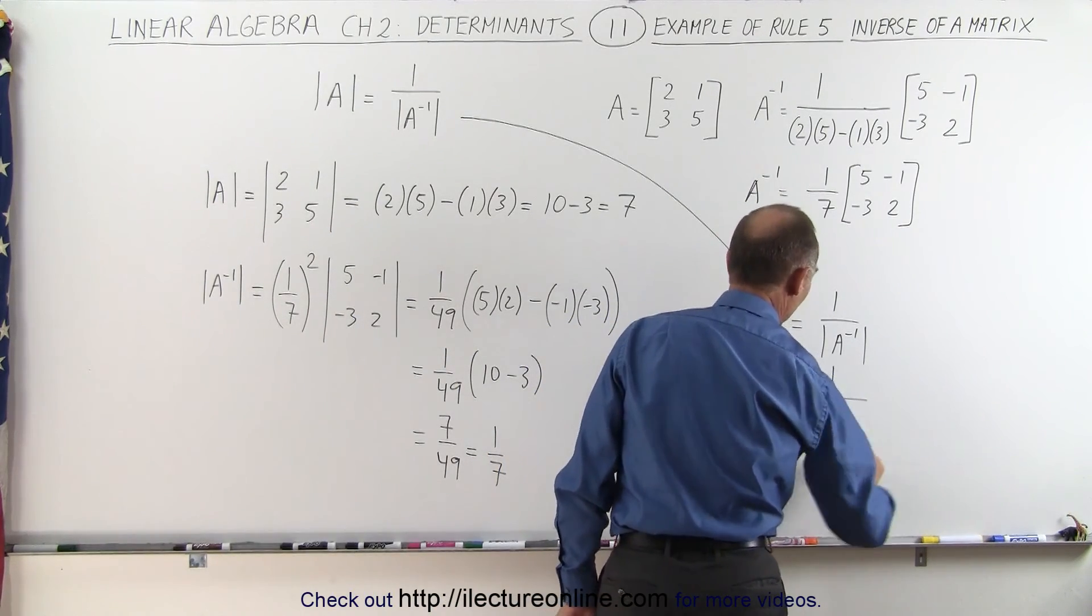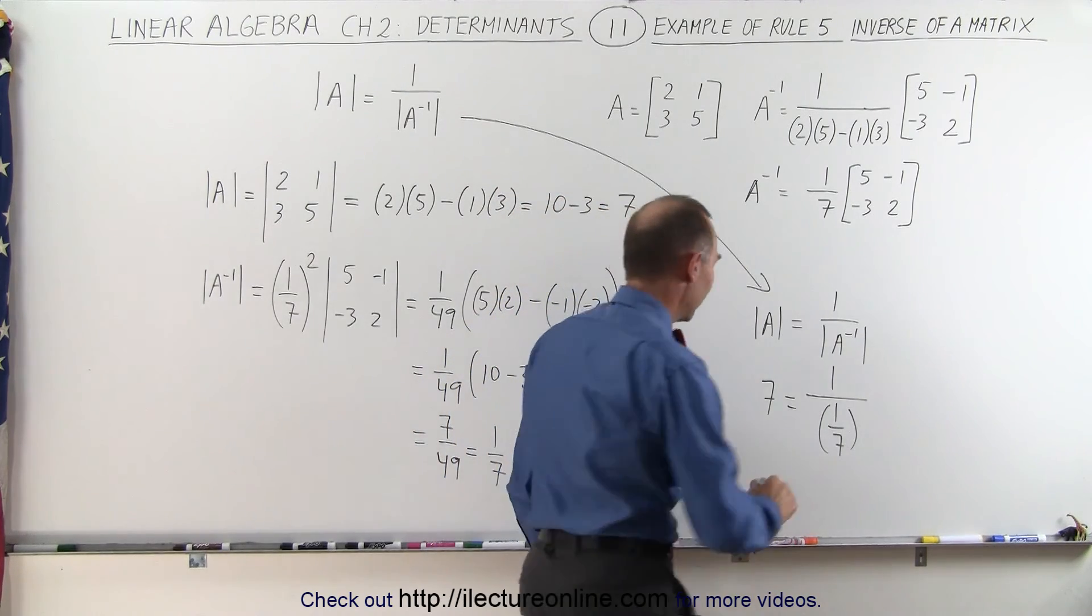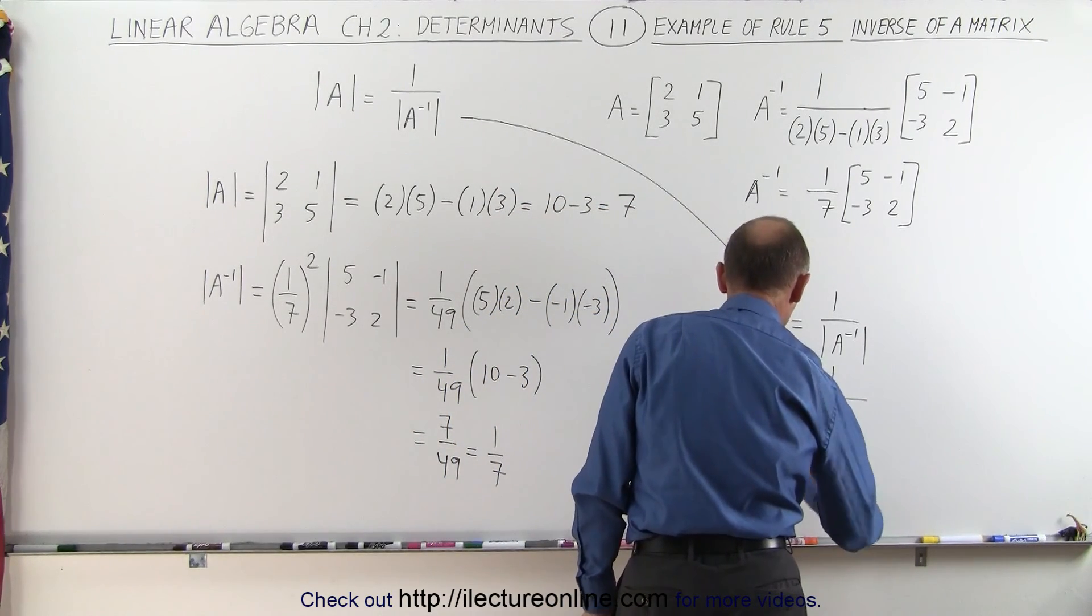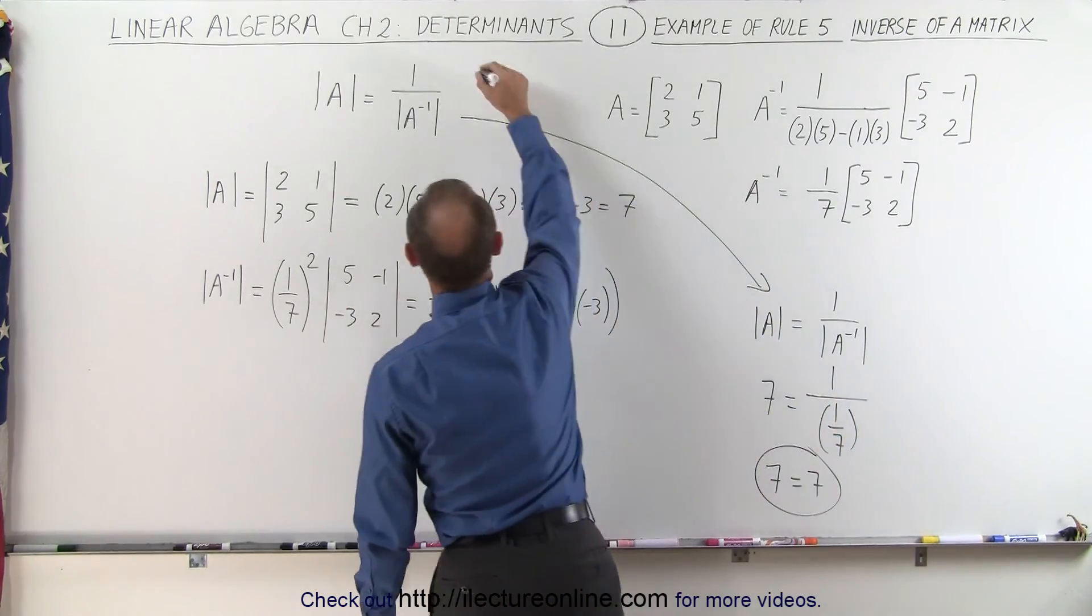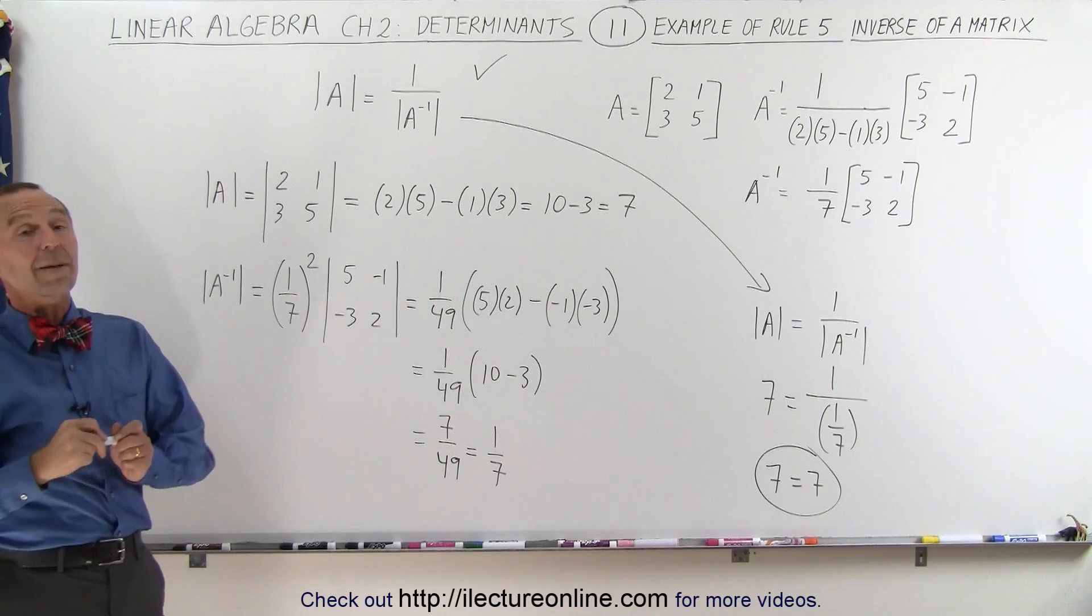And of course when you divide by a fraction that's the same as multiplying by its inverse. You can then see that 7 equals 7. Therefore we can verify that that is indeed correct, and there's an example of how rule number 5 can be applied.